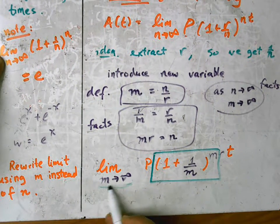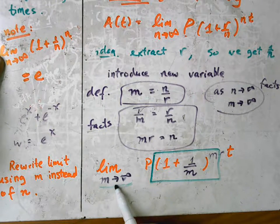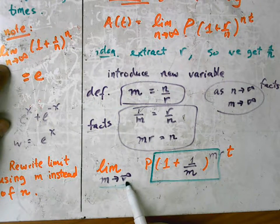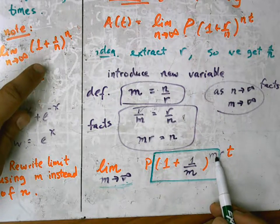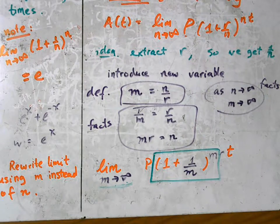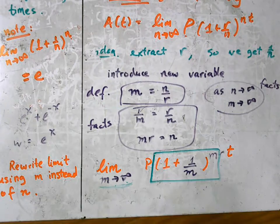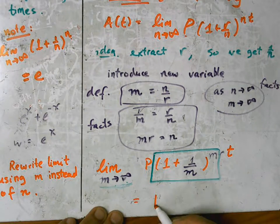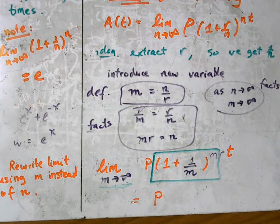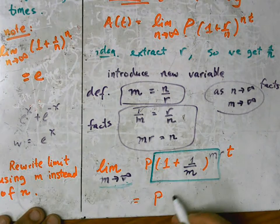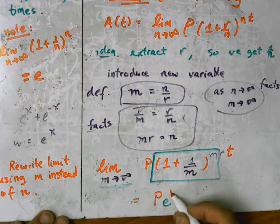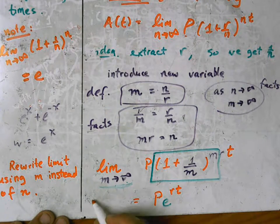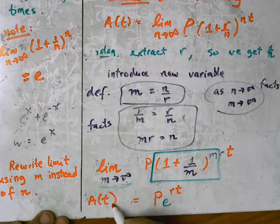The limit as a variable approaches infinity of 1 plus 1 over that variable raised to the variable is in fact equal to e. So that gives us p, everything in the green box here turns into e, raised to the rt, the famous pert equation.